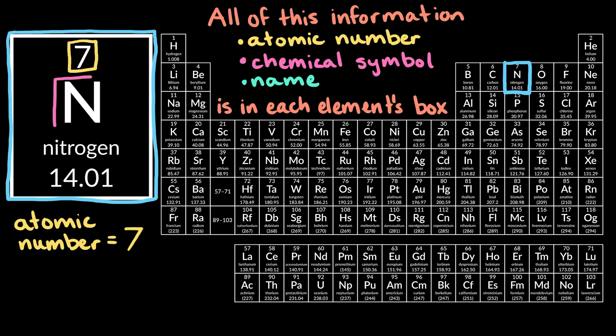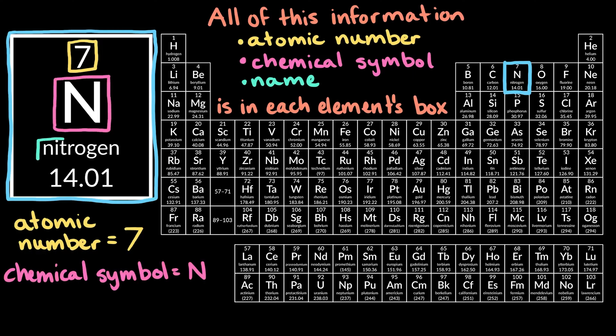Below that is nitrogen's chemical symbol, N, followed by its name. Often, you'll also see another number listed at the bottom of an element's box, which has to do with atomic mass. We'll cover details about this in another video.